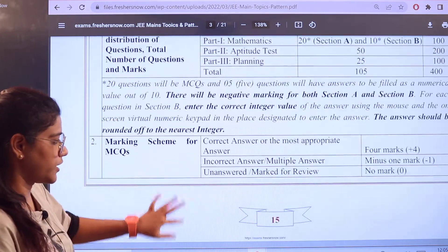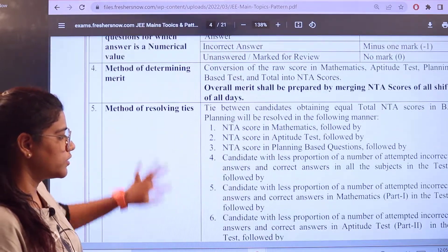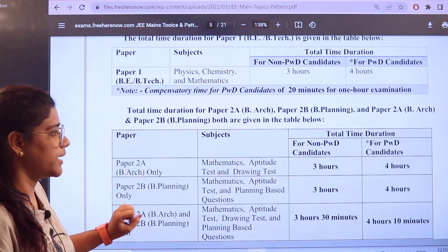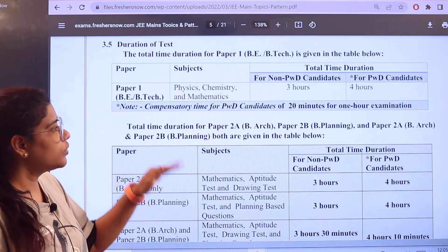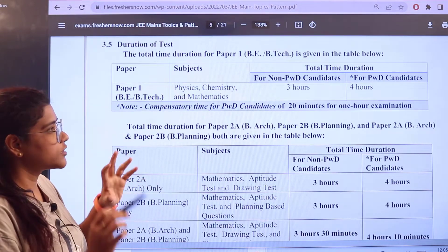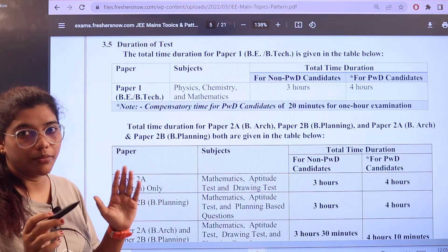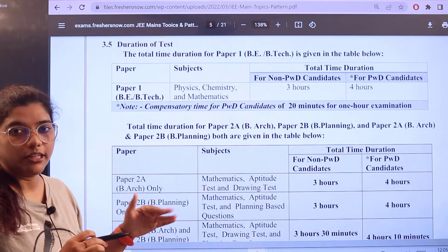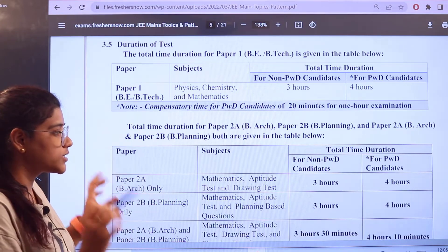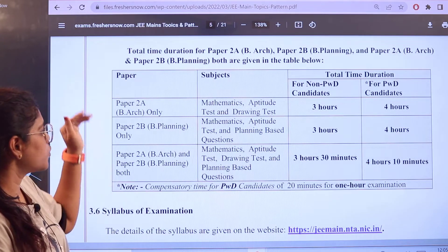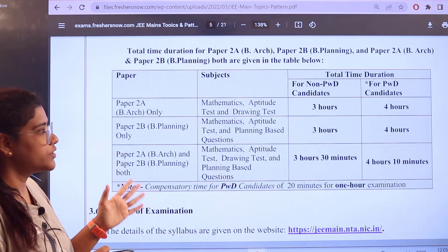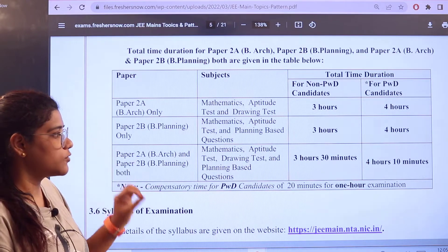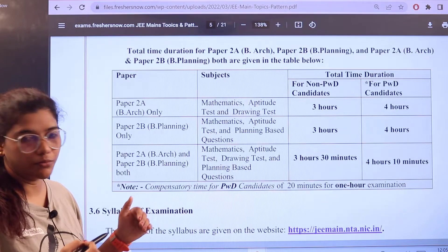Now heading over to the syllabus part, starting off with Mathematics. So as we all know that for Paper 1 it's going to be for three hours for non-PWD candidates. For the same paper for PWD candidates it's going to be for four hours. So depending upon the category, the hours allotment for the examination is given. So for Paper 2A, three hours. Paper 2B, it's for three hours. For Paper 2A B.Planning and for both it is three hours 30 minutes, so according to the subjects of choice.